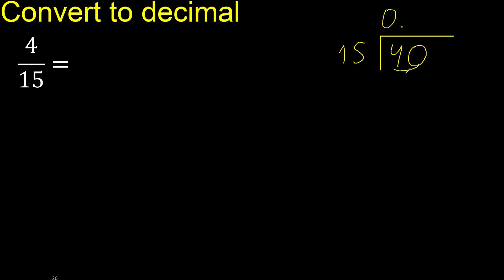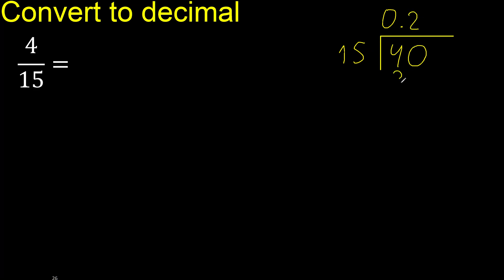40 is not less, therefore with 40: 15 multiplied by which number is nearest to 40 but not greater? 15 multiplied by 3 is 45, which is greater. 15 multiplied by 2 is 30 — ok, not greater. 40 minus 30 is 10. Next.